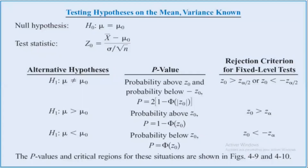Step 3 — compute the test statistic: the test statistic (in this context, a z-score) forms a ratio comparing the obtained difference between the sample mean and the hypothesized population mean versus the amount of difference expected without any treatment effect — the standard error. Step 4 — a large value for the test statistic shows the obtained mean difference is more than expected if there is no treatment effect. If it is large enough to be in the critical region, we conclude the difference is significant and reject the null hypothesis. If the mean difference is relatively small, the test statistic will have a low value and we fail to reject the null hypothesis.